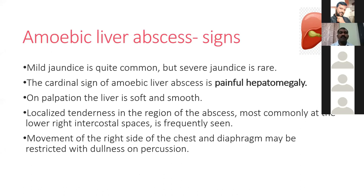Signs of amoebic liver abscess: jaundice is very rare compared to pyogenic liver abscess. The cardinal sign is painful hepatomegaly; on palpation the liver is soft and smooth. Localized intercostal tenderness is frequently seen. Movement of the right side of the chest and diaphragm may be restricted with dullness on percussion due to the abscess cavity.